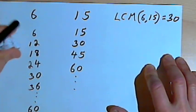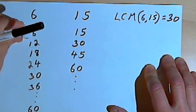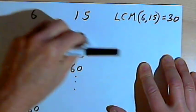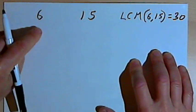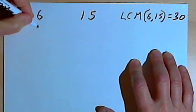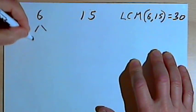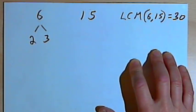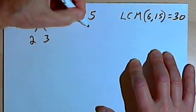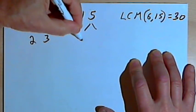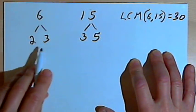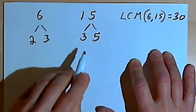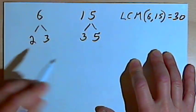Now this list method will work, but as your numbers get bigger it gets to be a lot of work, a lot of multiplication. So here's a much faster way to do it. I'm going to make a prime factorization for each of the numbers 6 and 15, so I'll do a factor tree. 6 is just 2 times 3. And 15 is easy too — 15 factors down into 3 times 5, and now I've got nothing but prime numbers. 2 times 3 for the 6, and 3 times 5 for the 15.